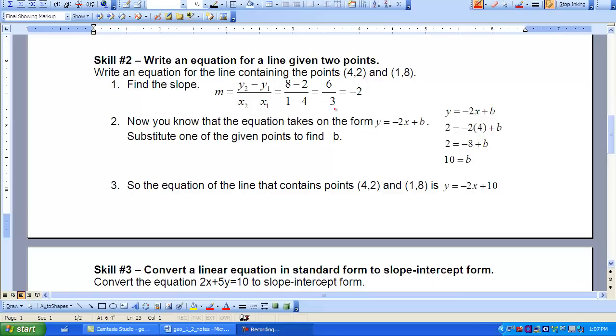So our slope for this line containing these two points is negative 2. So we know we can put the negative 2 in place of our M. So now we need to find our B. So what we can do is substitute one of our given points to find that B. So as you can see here, I chose to substitute 4 and 2 in place of X and Y. So you can see I used this point here.